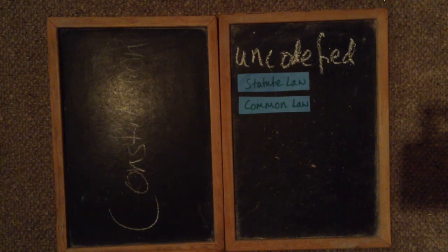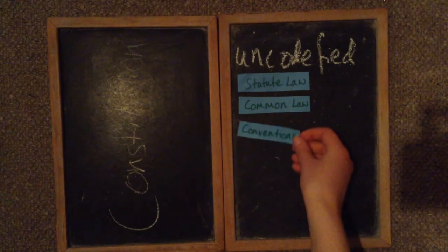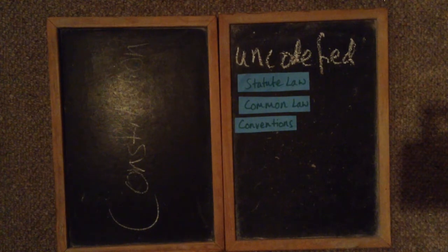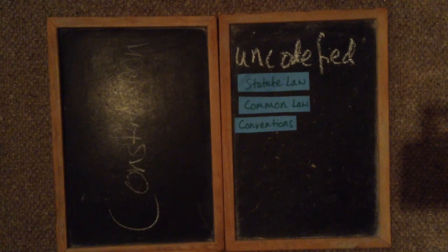This royal prerogative powers being passed to Parliament as a whole brings us to the next point, which is conventions. Conventions are what happens over a period of time and how people build up what they're doing. For example, it's a convention that all people in government vote with the government - that's collective ministerial responsibility, and this is what makes the government seem responsible.